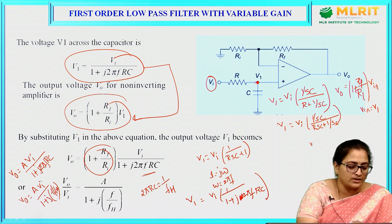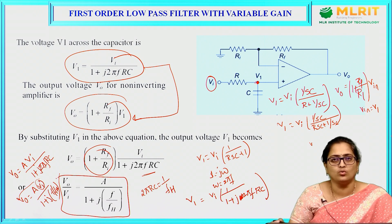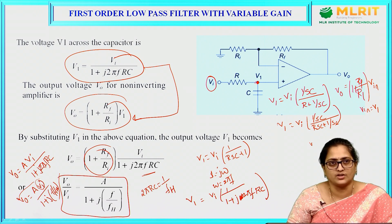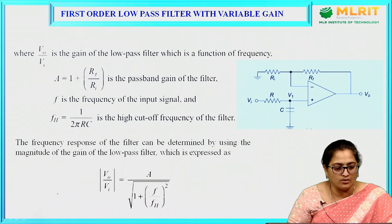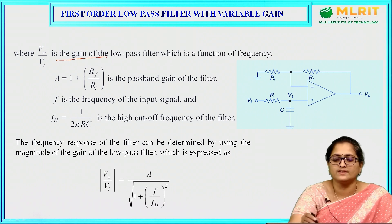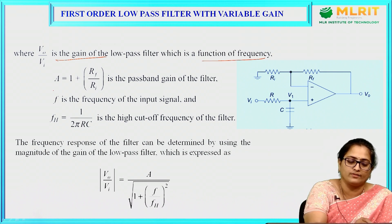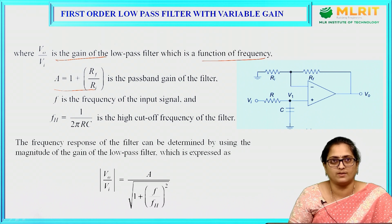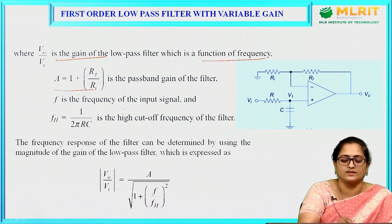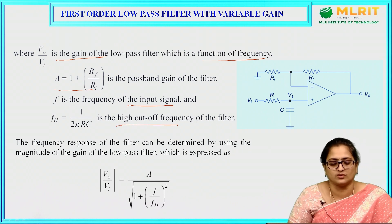Substituting, we can write V0 equals A into Vi divided by (1 + j·f/fh), where A equals (1 + RF/R1). Taking Vi to the left-hand side, V0/Vi equals A divided by (1 + j·f/fh). The ratio V0/Vi is the gain of the low pass filter, which is a function of frequency.